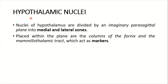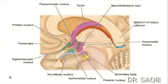The hypothalamic nuclei - their role and function will be discussed in the next lecture. The nuclei of the hypothalamus are divided by an imaginary parasagittal plane into medial and lateral zones. Placed within this plane are the columns of the fornix and the mamillothalamic tract, which act as markers. This is the fornix, and here we draw the imaginary line to divide the medial and lateral nuclei. As the fornix comes down toward the mammillary bodies, this portion is called the column of the fornix - the reference point.